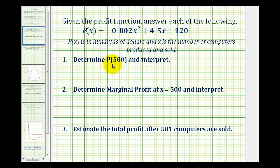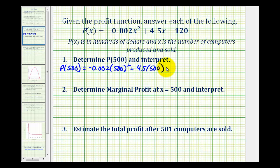We first want to determine p(500) and interpret the meaning of this. To evaluate p(500), we'll replace x with 500 in the profit equation. I've already evaluated this — it comes out to 1,630. Remember, this is in hundreds of dollars, so we need to multiply by 100 to determine the total profit from producing and selling 500 computers.